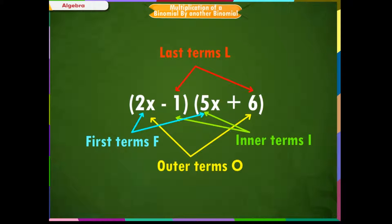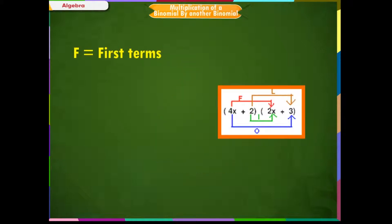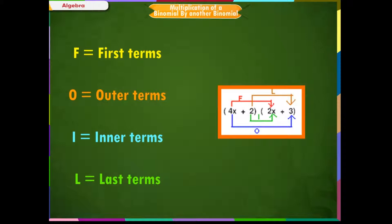Remember: F means first terms, O means outer terms, I means inner terms, and L means last terms.